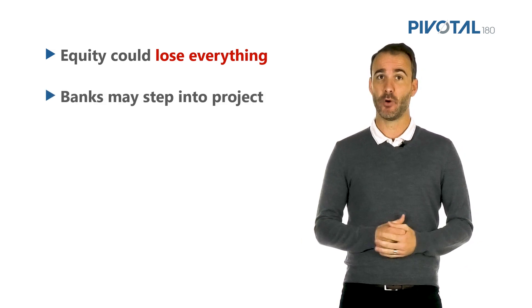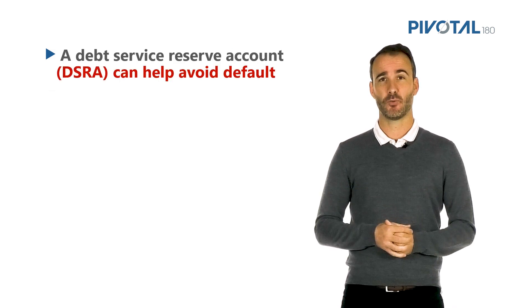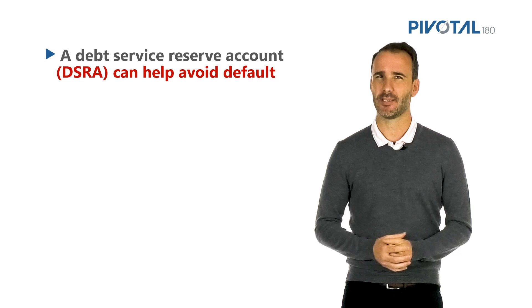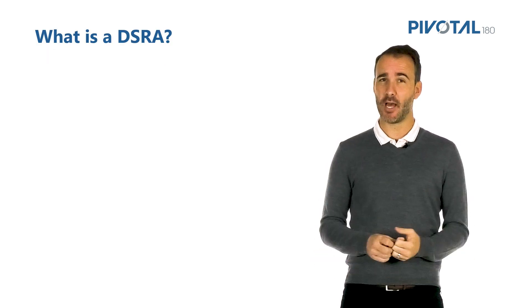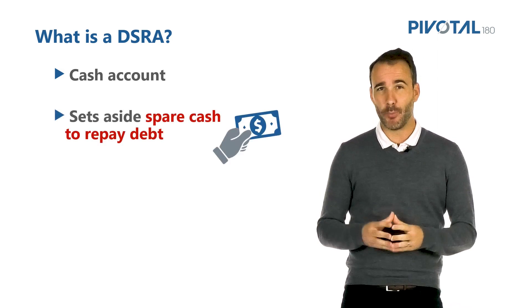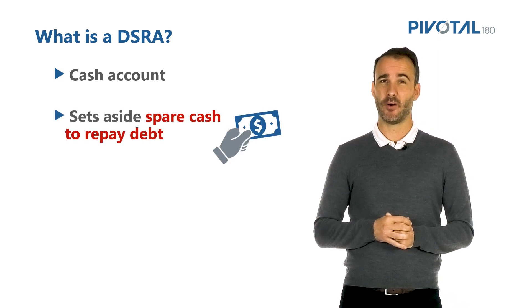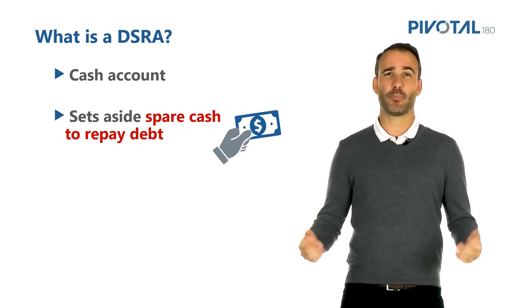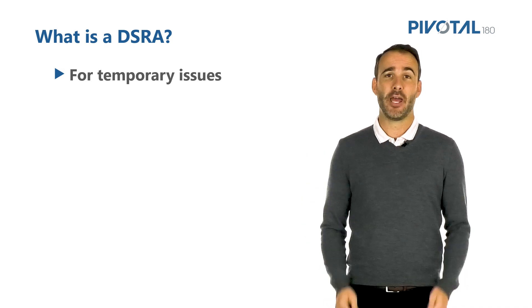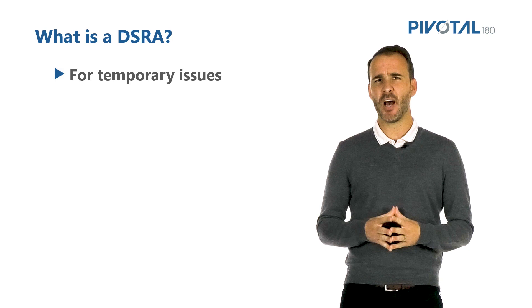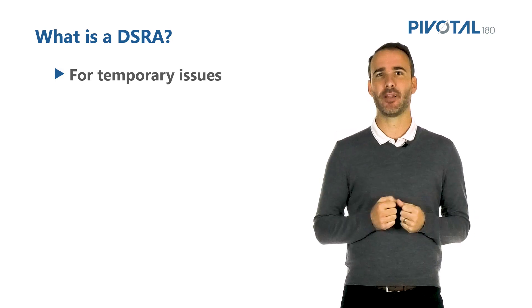We could potentially have avoided default by using a debt service reserve account, or DSRA. A DSRA is a cash account that retains money for when CADs is too low to service our debt. It will help in this current example to avoid default. However, if you had a major project failure — say your project was out of service a whole year — it would not help in that situation. The account is really cash security for the lenders, so the lenders want to monitor the amount within.